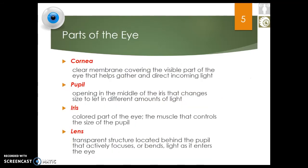Here are the parts of the eye you need to know for the test: the cornea, the pupil, the iris, and the lens. Imagine I flicked a piece of corn at your eyeball — the good thing is it wouldn't go inside your eye because of a clear, transparent membrane that protects the eye and helps gather incoming light. That's called the cornea. I flick a piece of corn into your cornea — that's how I remember it.